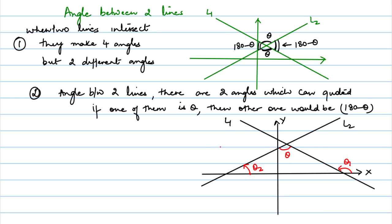Now, how are theta, theta1 and theta2 correlated? If you look closely, by the exterior angle property: theta plus theta2 equals theta1. Therefore, we want theta, so theta equals theta1 minus theta2.